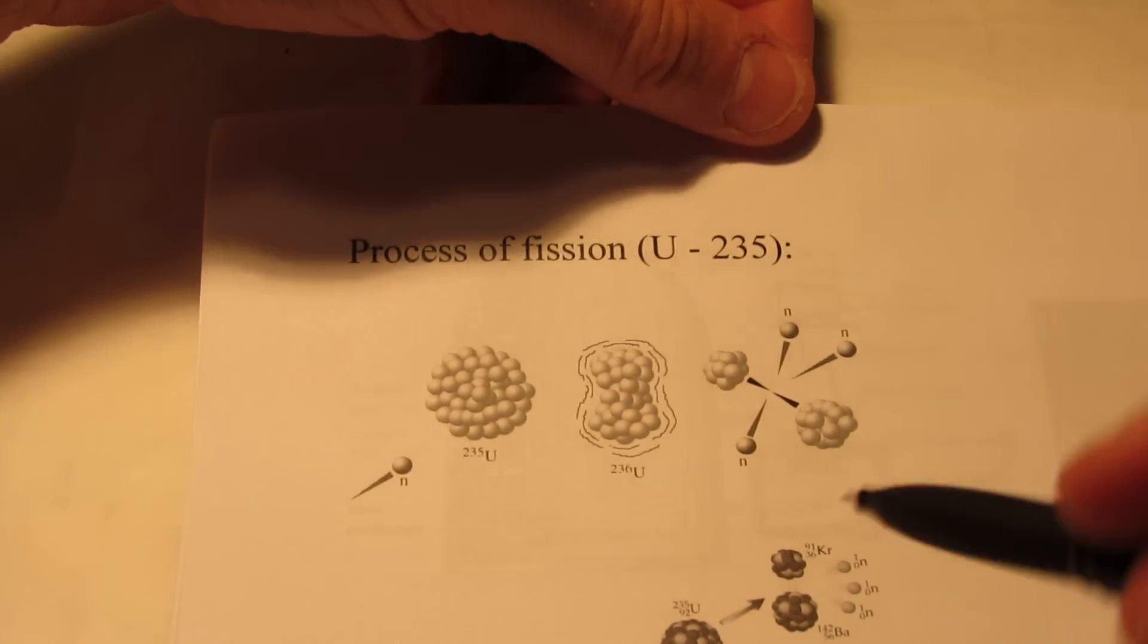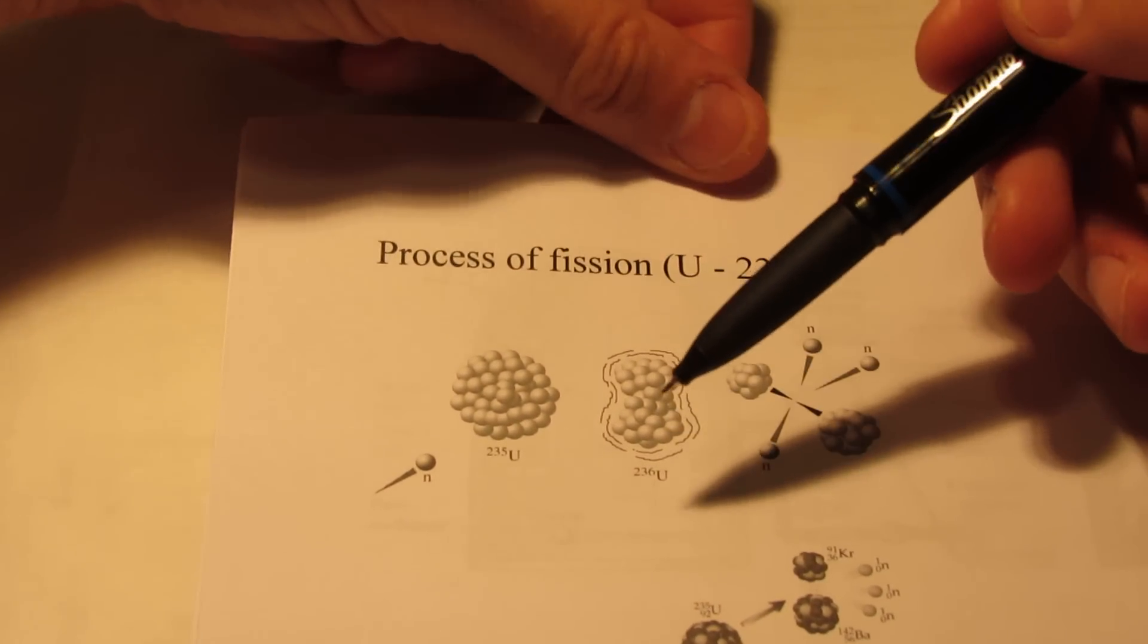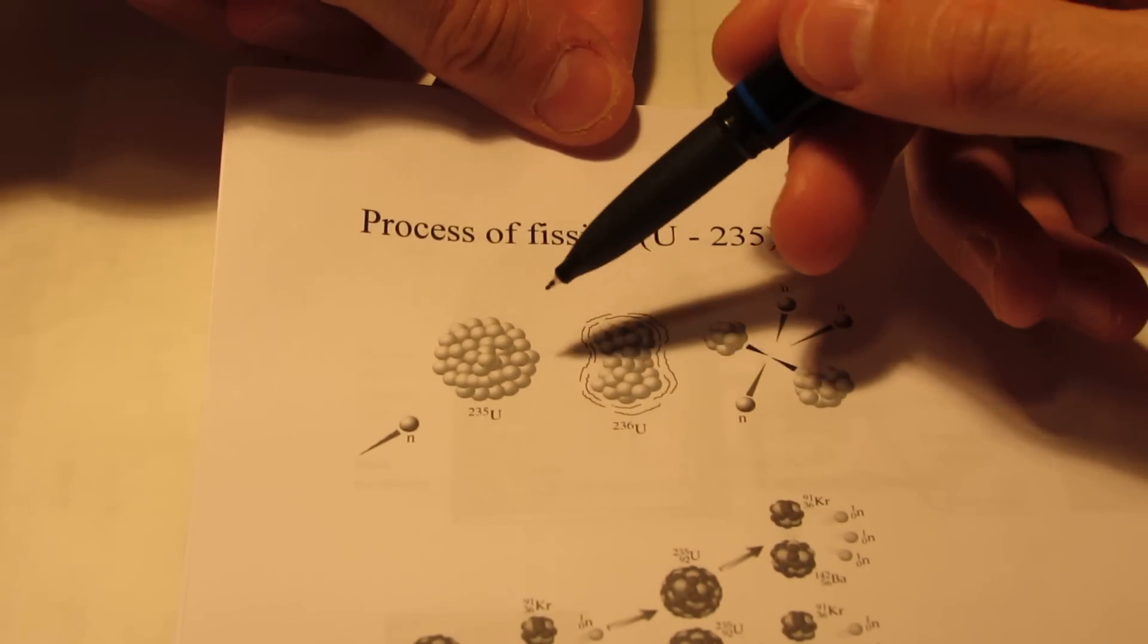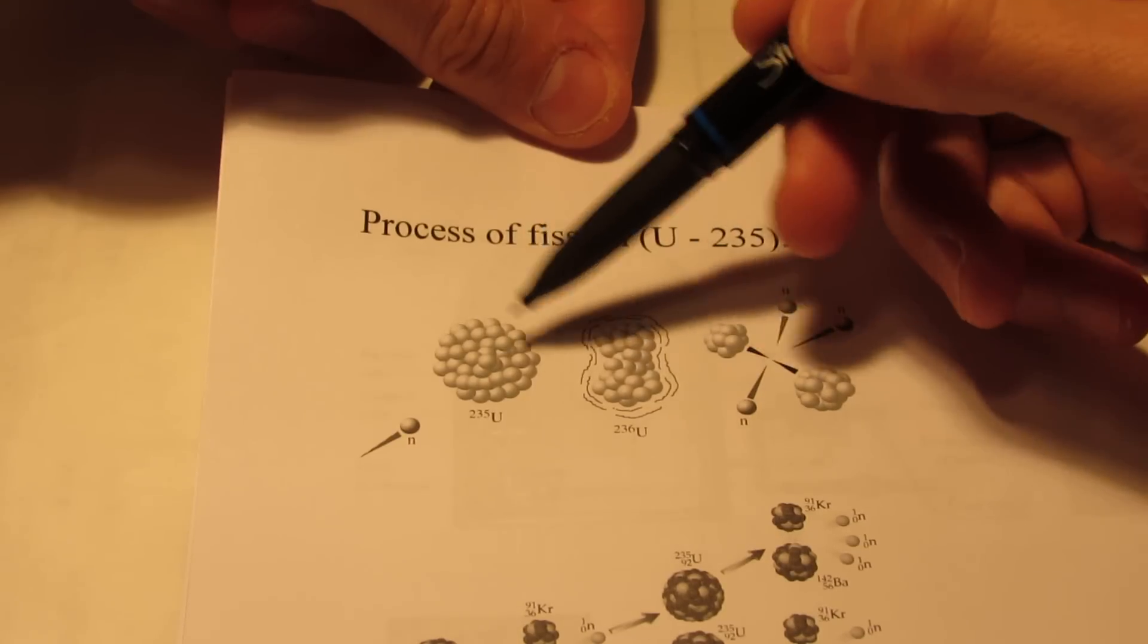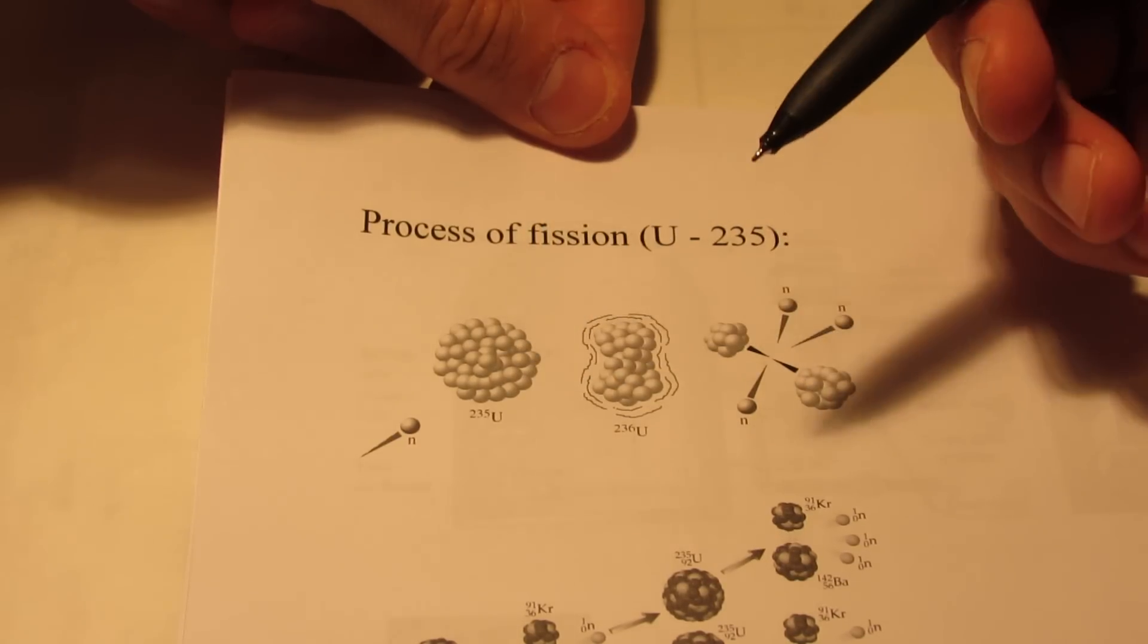Now, what happens? Well, uranium-235 is the only naturally occurring fissionable element. There are other elements that are fissionable, but they're all synthetic, they're man-made. Now the nucleus of uranium-235 is unstable.